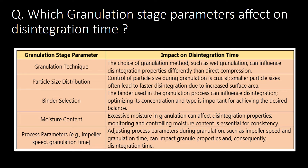Which granulation stage parameters affect disintegration time? Granulation technique, particle size distribution, binder selection, moisture content, and process parameters like impeller speed and granulation time are the parameters that have an impact on disintegration time. You can refer to the table below for more details about these parameters and how they impact disintegration time.